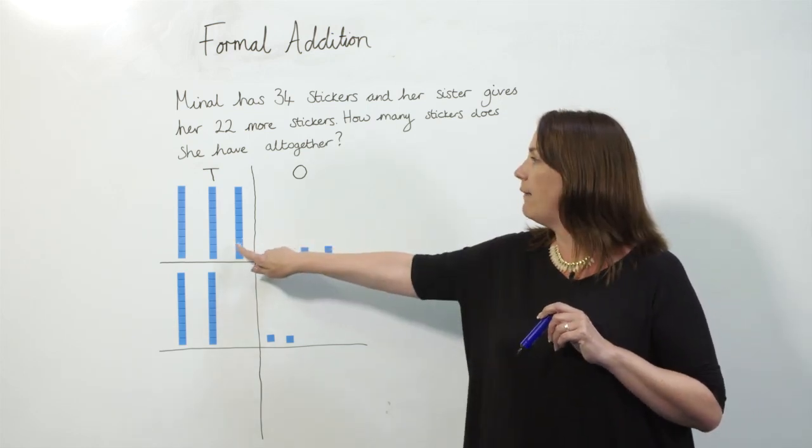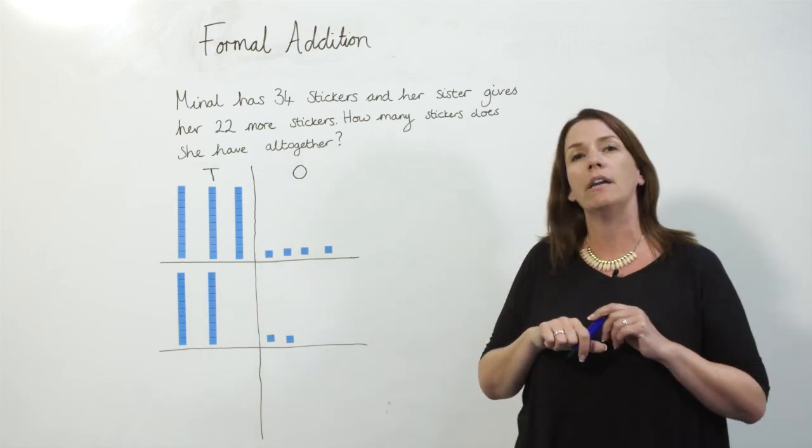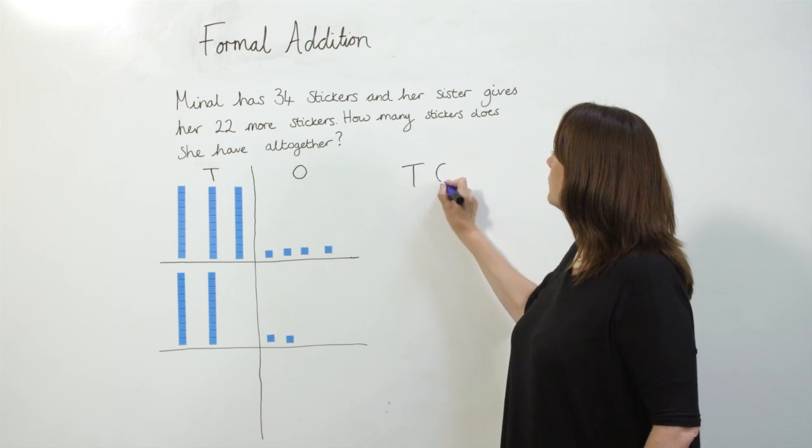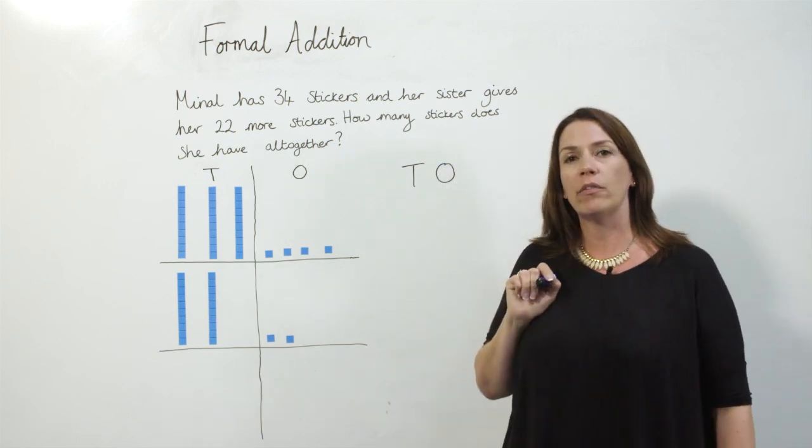You can see on our base 10 that we have 34 in our tens and ones column so I'm going to put tens and ones and then I'm going to put the number 34 in.